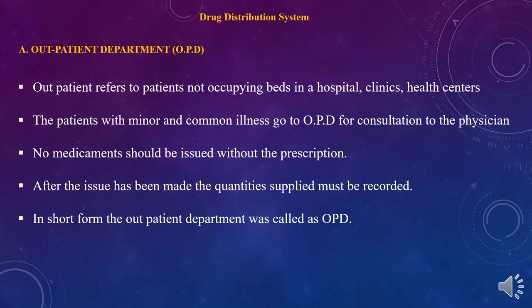Now we discuss the drug distribution system for the outpatient department or ambulatory patient. An ambulatory patient refers to a patient not occupying any bed inside the hospital, clinic, or healthcare center. Patients with minor or common injuries visit a physician in the OPD region. After visiting, the doctor writes a drug order in a manual format — a manual prescription. No medication should be issued without a prescription.